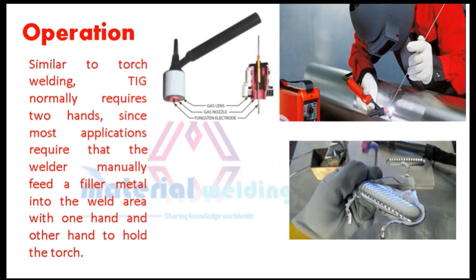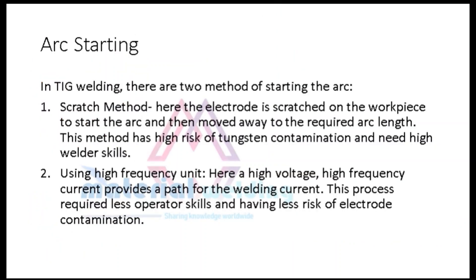Similar to torch welding, TIG normally requires two hands, since most applications require that the welder manually feed a filler metal into the weld area with one hand and hold the torch with the other. In TIG welding, there are two methods of starting the arc. The scratch method: here the electrode is scratched on the workpiece to start the arc and then moved away to the required arc length. This method has a high risk of tungsten contamination and needs high welder skills. Using a high-frequency unit: here a high-voltage, high-frequency current provides a path for the welding current. This process requires fewer operator skills and has less risk of electrode contamination.